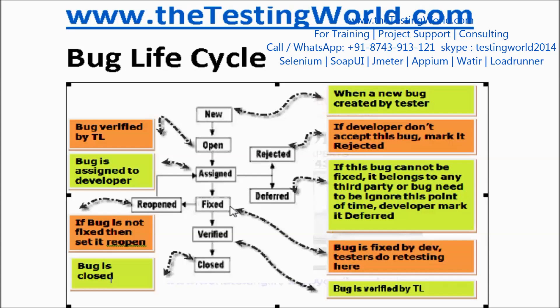Once the bug is fixed, the tester's responsibility begins. As a tester, I check whether the bug is fixed or not. If the bug is not fixed — if I test it again and find the bug is still appearing — we set it to 'Reopen'. Once reopened, the dev lead will again assign the bug to the developer to work on it again.